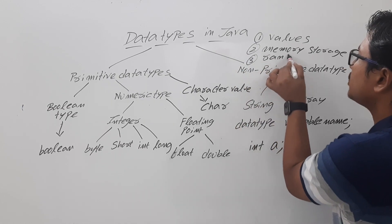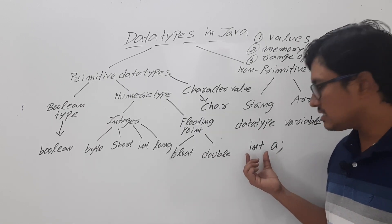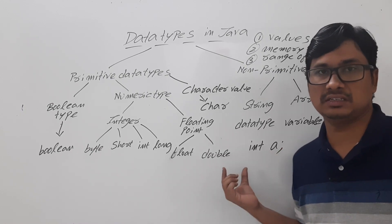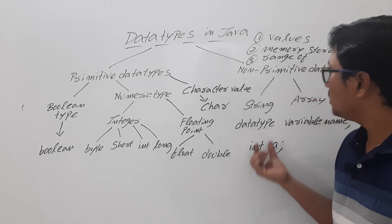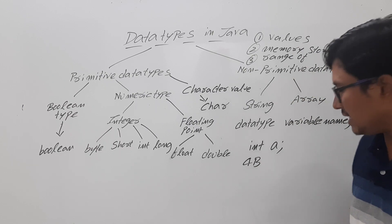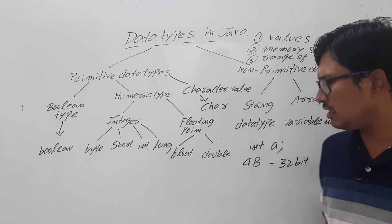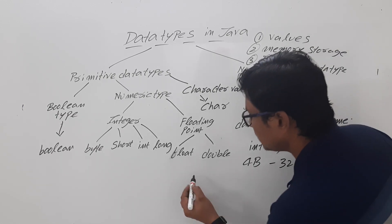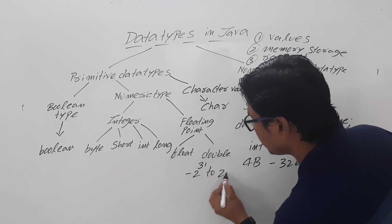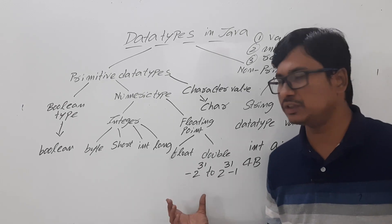For example, if int is the data type, then variable 'a' can store integers. How much memory will be allocated? Since it is an int, four bytes of memory will be allocated — four bytes is 32 bits. And what is the range of values it can hold? It can hold minus 2 to the power 31 to 2 to the power 31 minus 1. How this range came, I will discuss with you.